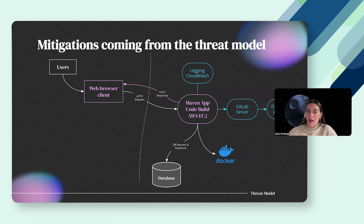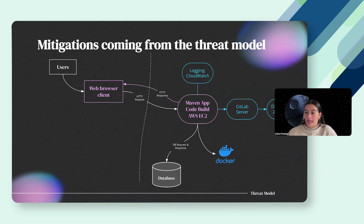This is our original architecture diagram, and this is what it looks like with our mitigations in place — making sure that we have CloudWatch for logging and also application scanning using ZAP. I'll talk a little bit more about these things as we go ahead.